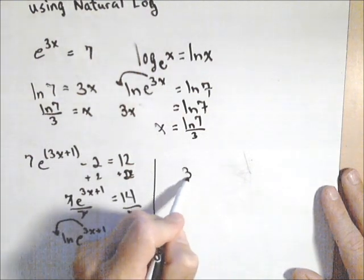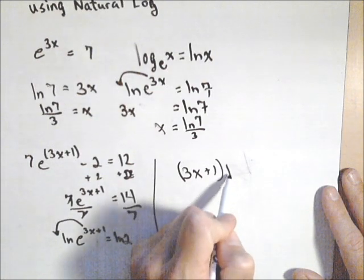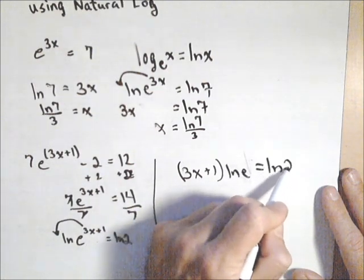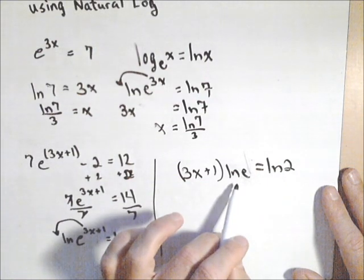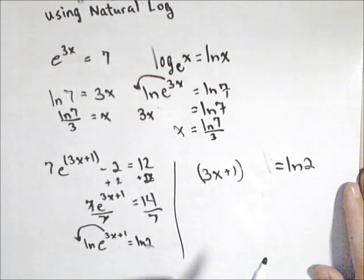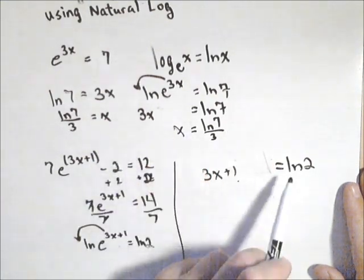So I'm going to write it over here to this side. So I have 3x plus 1, you do want to put that in parenthesis, times the natural log of e equals ln of 2. Now, as we mentioned before, natural log of e is just 1. So that's going to go away. So we have 3x plus 1 equals ln of 2.